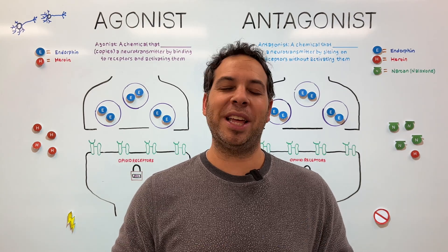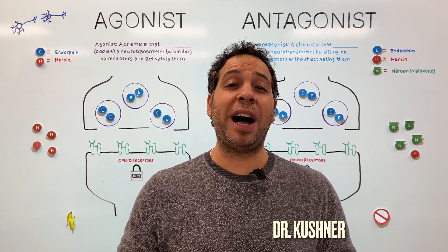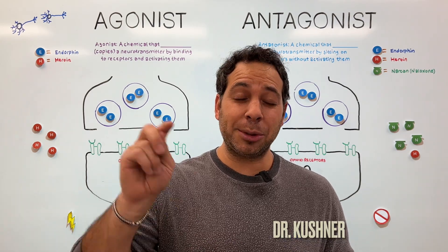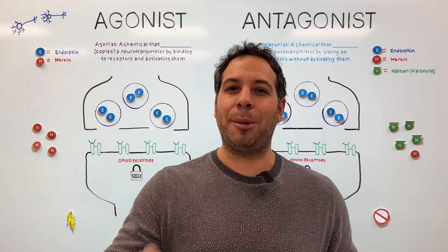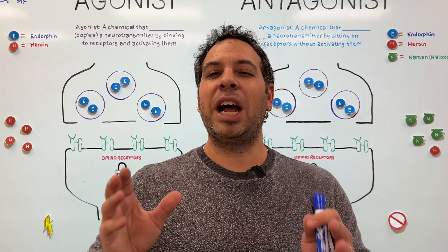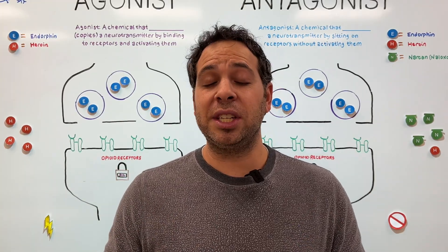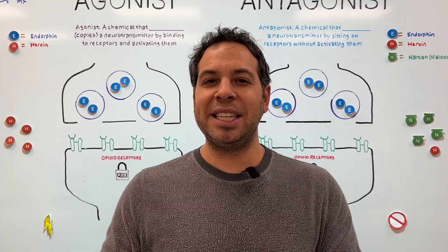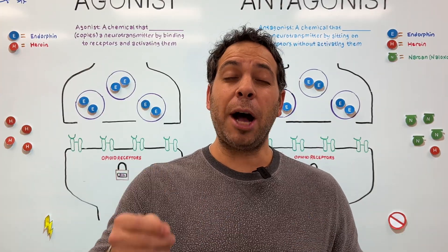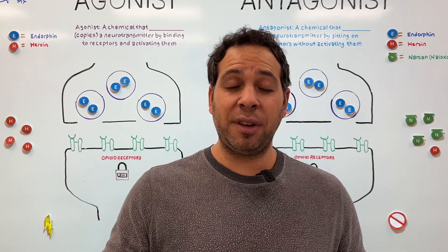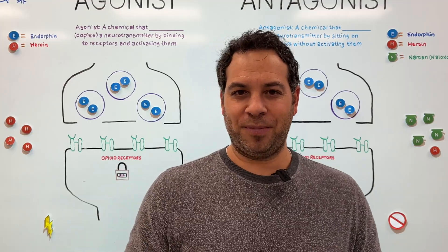Alright guys, welcome to Psych Explained. Dr. Cush here. Before we move on, don't forget to hit that subscribe button so you don't miss out on future videos and updates. Now in this video, we're going to talk about the difference between agonists and antagonists, two terms that are going to help us make sense of how drugs and neurotransmitters affect the brain.